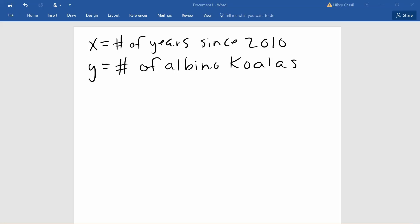Let's go ahead and model our koala situation now. We are going to let x be our number of years since 2010, and y be the number of albino koalas. So our exponential function of the form a times b to the x is going to be y equals 12 times 1.05 to the power of x.